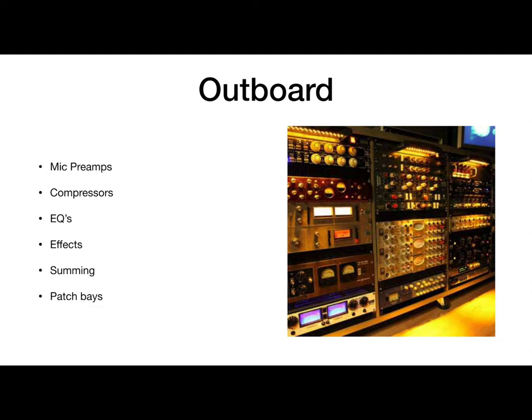Processing such as compressors, EQs, delays, and reverbs are all commonly used during the mixing stage. Many software manufacturers do quite a good job emulating sought-after pieces of equipment. Because of this, anyone can afford to get comfortable using a high-end vintage compressor, such as the UA1176 or Pultec EQs. Some software companies are even beginning to emulate preamps and microphones, allowing you access to high-end gear at a low cost.